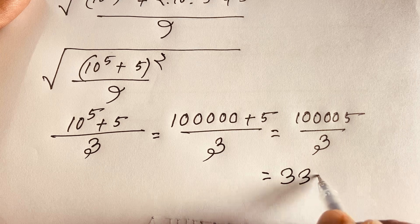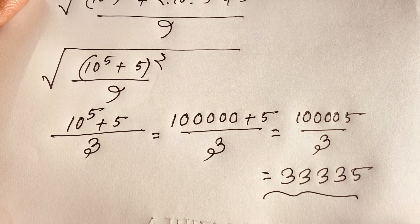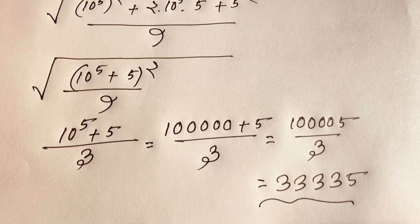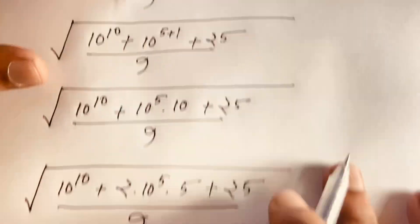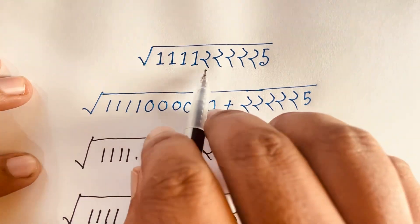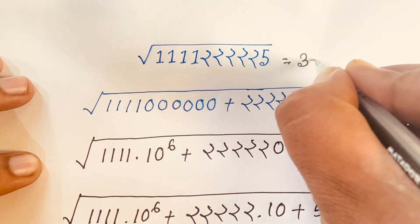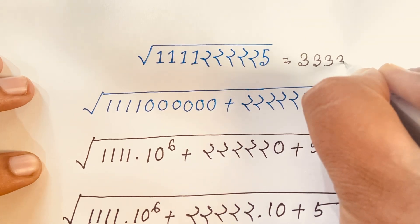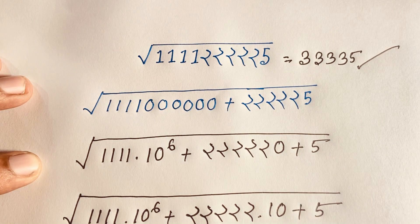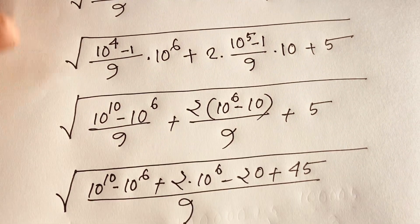Dividing 100005 by 3 we find 333335. So this is our final answer. Our question was the square root of 111122222225, and the answer is 333335. This is our final answer in this math olympiad question. Thank you all — if you enjoyed this video please subscribe to my channel for other interesting videos. Goodbye, take care.